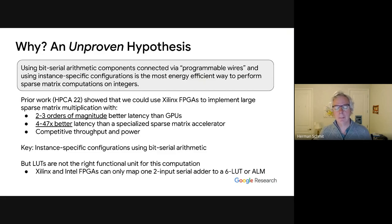Throughput and power are harder to measure, but we believe that those are competitive as well. The key to these performance numbers are using instance-specific configurations on the FPGA. In other words, taking the matrix itself, compiling a specific netlist for that particular matrix, and then placing routing that matrix. We use bit serial arithmetic to achieve the density to give us compelling size matrices.